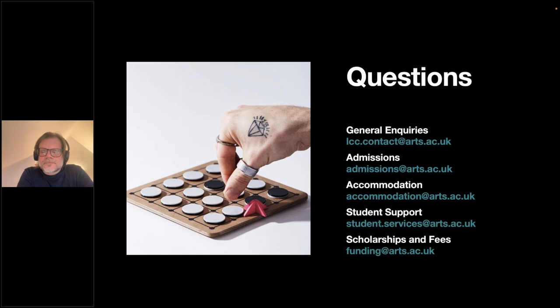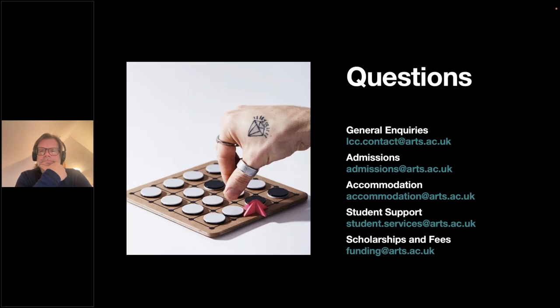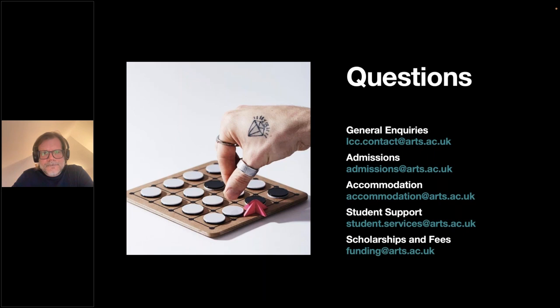One common question is about average class size. In 2020-21 we had 31 students, last year we had 31, and this year we have 25. Our ideal number is about 30 to 32, because we split that into two workshop groups of 16. It's big enough to have the resources, but small enough to be intimate and have a good cohort feel.